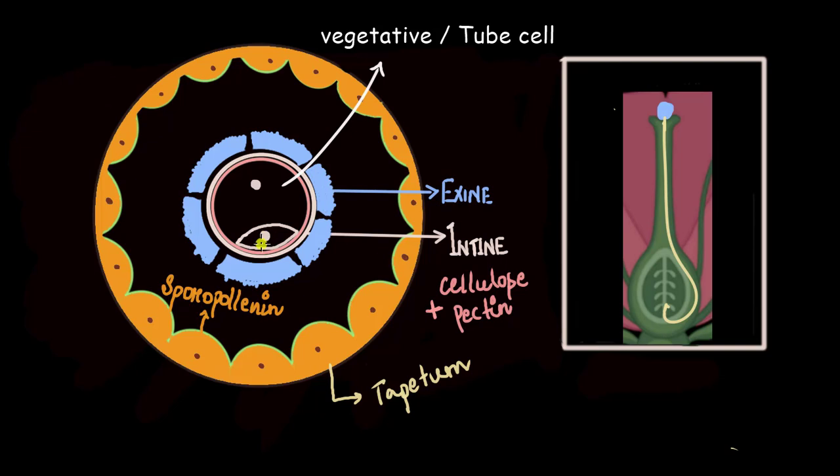Then what is the job of this smaller cell? This cell we call the generative cell because this cell gives rise to the male gametes. And most pollens are released in this stage—this two-cell stage, one which we call vegetative or tube cell and the other which we call generative cell that gives rise to the male gametophyte. In this stage the pollens are released.